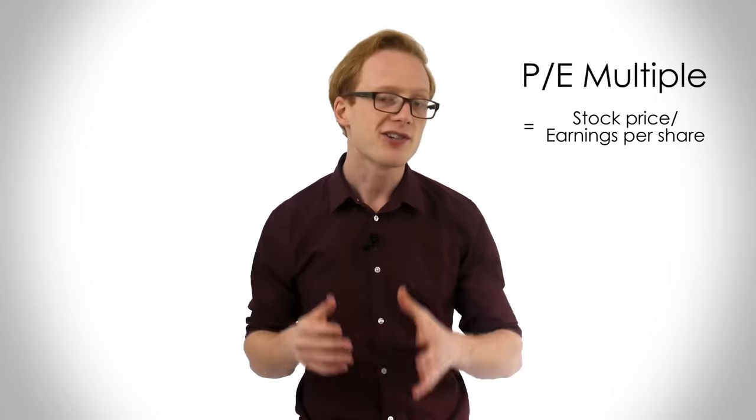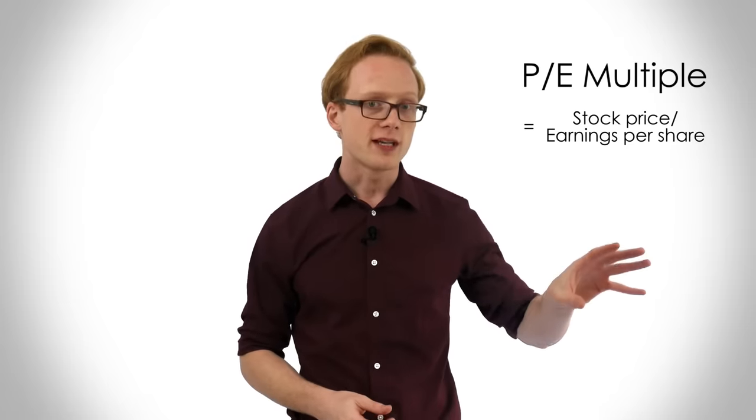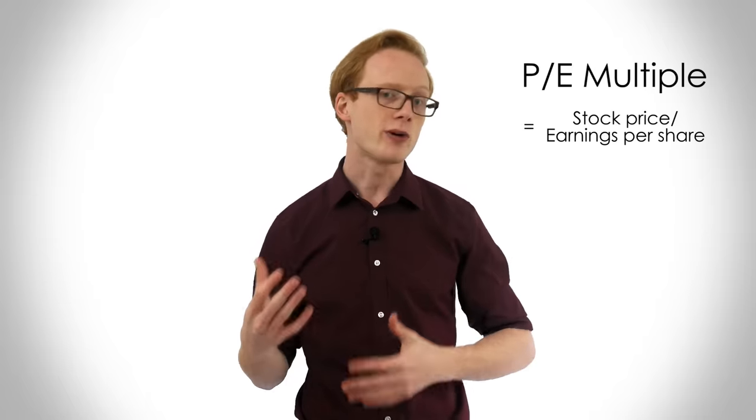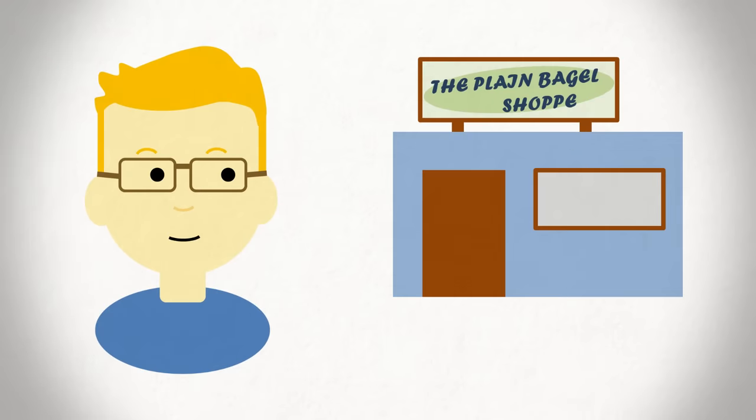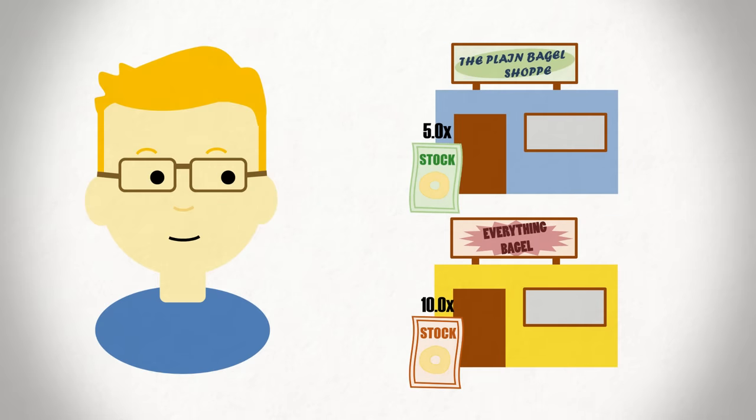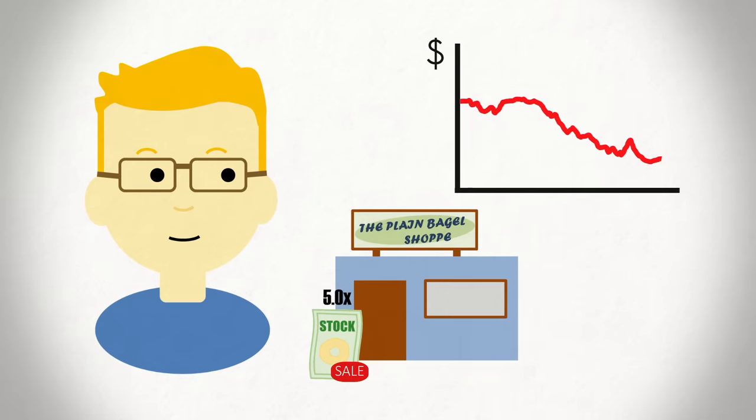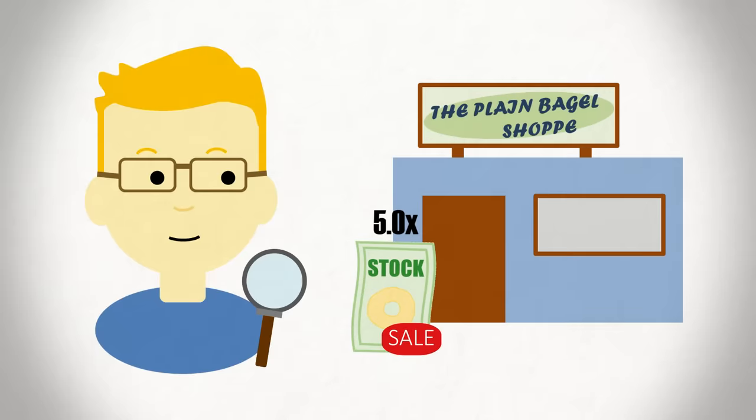The PE ratio shows how much an investor is willing to pay for a stock's operations. And by comparing it to the multiple of peers and the market as a whole, investors can see which companies are cheapest in their industry. For example, imagine a value investor finds a bagel company that's trading at a PE multiple of five times. Compared to other bagel companies, which are trading at a PE of 10 times, the company appears to be cheaper. And while the stock is currently out of favor with the stock market, the investor carries out some research and determines that the company has a good management team and strong fundamentals. So with the belief that the company will eventually return to a 10 times multiple, the investor will buy the stock. Knowing that even if things stay flat, they aren't paying too much for the stock. So there's less at risk if things don't go the way they expect.